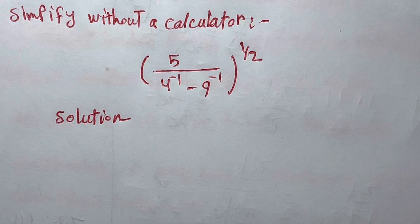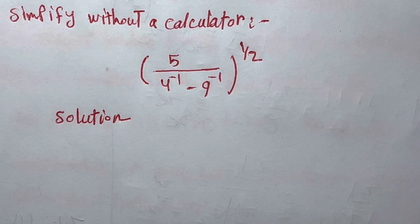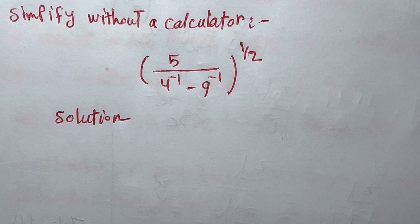Hello everyone, hope you are doing well. Today we are going to solve this question without using a calculator. The expression is five over four to the power of minus one, minus nine to the power of minus one, all raised to the power of one over two.